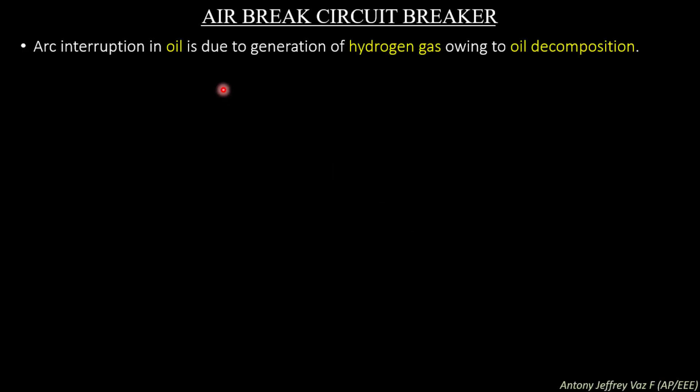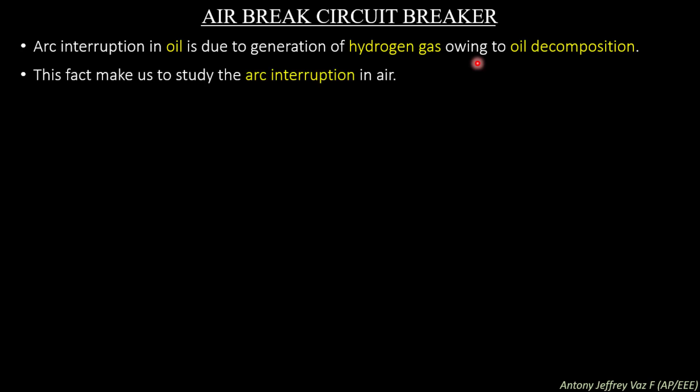Arc interruption in oil is due to the generation of hydrogen gas owing to oil decomposition. When an oil circuit breaker is used, the medium is oil. To interrupt the arc, oil gets decomposed and produces hydrogen gas, and this hydrogen gas quenches the arc. This fact leads us to study arc interruption in air, since air consists of all types of gases and hydrogen gas is also present in air. So we can study the properties of hydrogen gas present in air which can be useful for arc interruption.